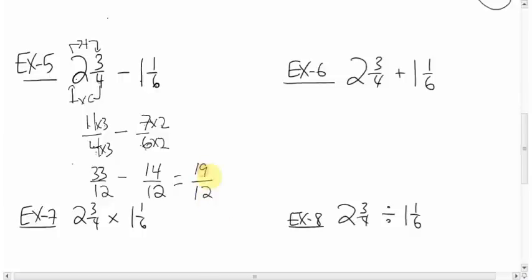Here, you have an improper fraction. We must change that to a mixed. So, to do that, twelve goes into nineteen once, with seven left over, over twelve. That's it.